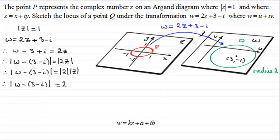So what has actually happened? The value k which in this example is 2 has enlarged our shape by a scale factor of 2, centre the origin. And then we've got this other complex number 3 minus i. So when we've added the complex number 3 minus i, what has actually happened is it's then translated the enlarged circle in this case three units to the right, one unit down.